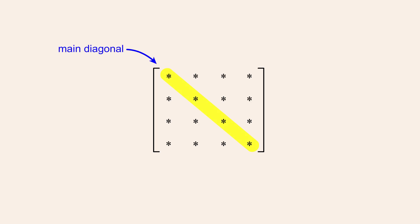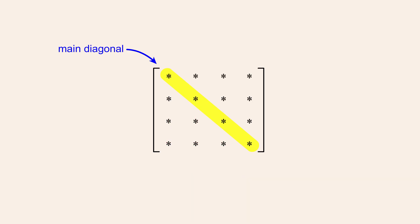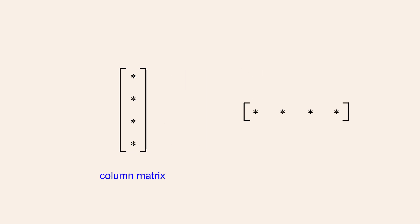An upper triangular matrix is a square matrix whose entries below the main diagonal are all zero. The entries in the main diagonal and above can have any value, zero or otherwise. Likewise, a lower triangular matrix is a square matrix where all the entries above the main diagonal are zero. In a lower triangular matrix the entries in the main diagonal and below can have any value. A diagonal matrix is a square matrix whose entries above and below the main diagonal are zero. Other special types of matrices are matrices with only a single column called column matrices, and matrices with a single row called row matrices.